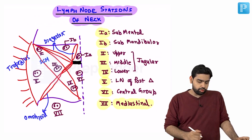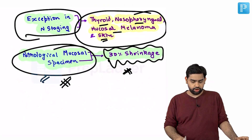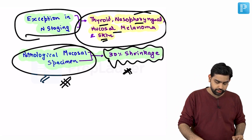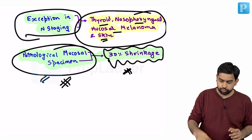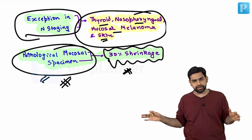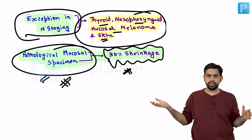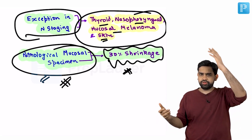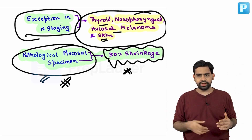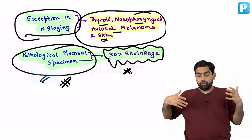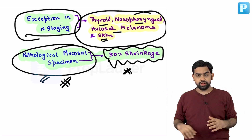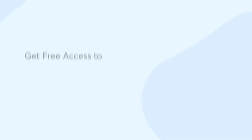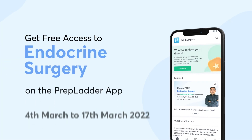To summarise what was covered: we discussed different premalignant conditions, their risk of malignant transformation, and then the TNM staging for head and neck malignancies including lymph node dissection.